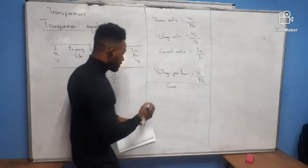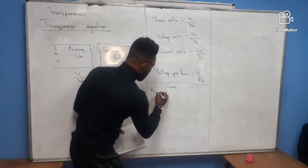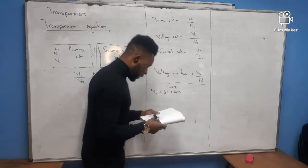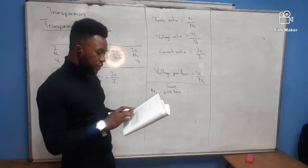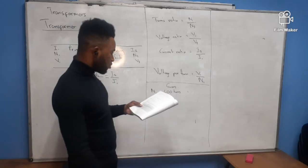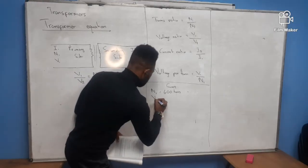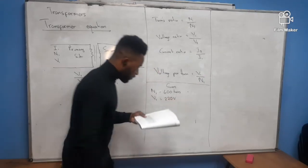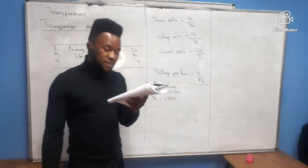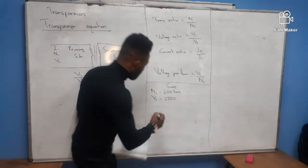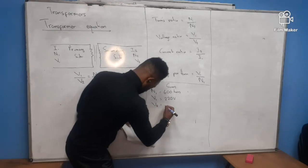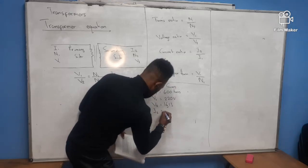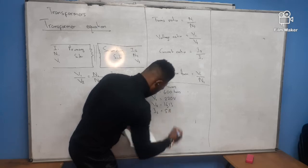So the given data: N1 = 600 turns on the primary side. V1 = 220V AC — the supply side is the primary side. On the secondary side, V2 = 16.13 volts, and I2 = 5 amps.